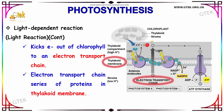In the light-dependent reaction, light kicks electrons out of chlorophyll to an electron transport chain. The electron transport chain is a series of proteins in the thylakoid membrane — you can see the thylakoid membrane here. The electron transport chain series of proteins is represented here.